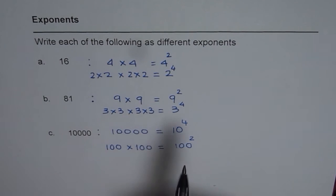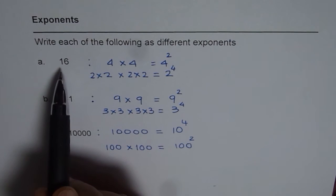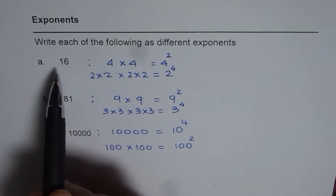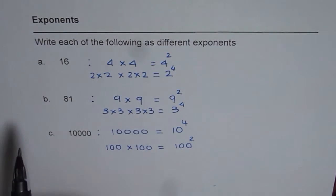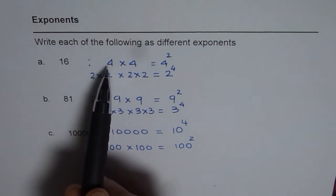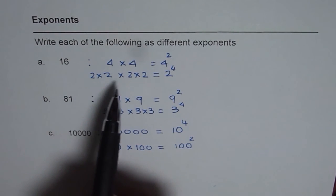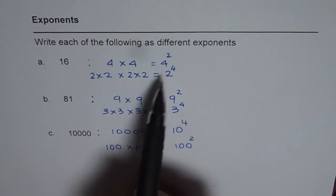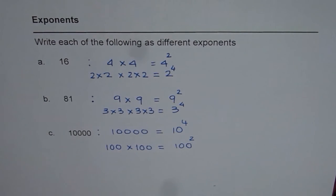The strategy here is you can find square root of the number. Square root of 16 is 4, so it is written as 4 squared. And then square root of 4 is 2, so it could be written as 2 to the power of 4. So you can also find square root.